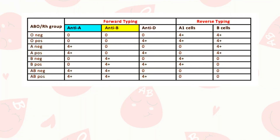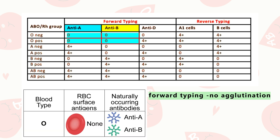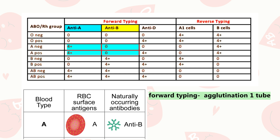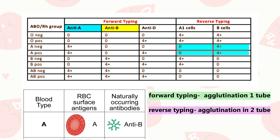Recap of overall blood group results: For blood group O, there is no antigen, so forward typing shows no agglutination; anti-A and anti-B are present in plasma, causing agglutination in reverse typing. For blood group A, the A antigen is present on RBCs and reacts with anti-A, causing agglutination in forward typing, while anti-B gives a 0 result; antibody B is present in plasma and reacts with B cells in reverse grouping, resulting in agglutination in the second tube.